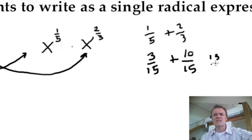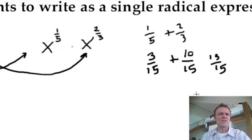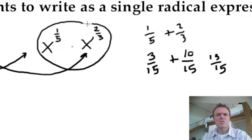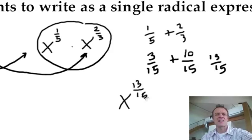That is 13 fifteenths. So what I'm saying is, if I multiply those two things here, I add the exponents, I get 13 fifteenths. This is x to the 13 fifteenths. But, it says, write it back as a radical.